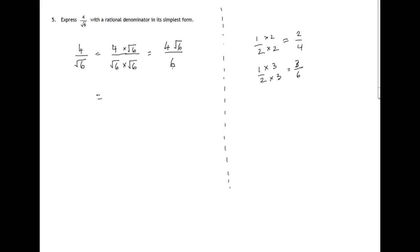We've now got in the top and bottom of this fraction a common factor of 2. Two twos are 4, two threes are 6. So if we divide top and bottom by 2...